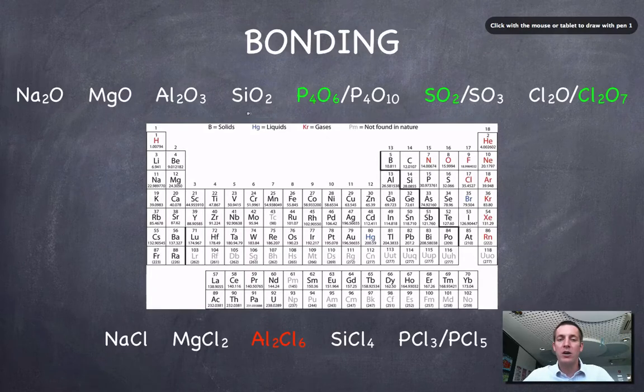Here we've got a covalent network in silicon dioxide which we already know about, so we know that it doesn't conduct and it's got a very high melting point. And here we've got the covalent molecules which we don't expect to conduct but which we expect to have rather low melting and boiling points because of the weak intermolecular forces.